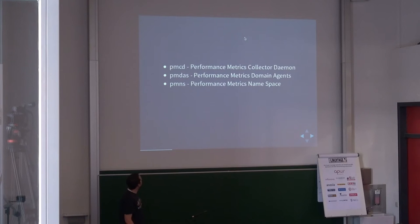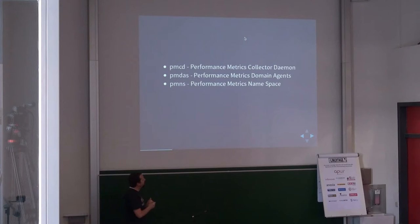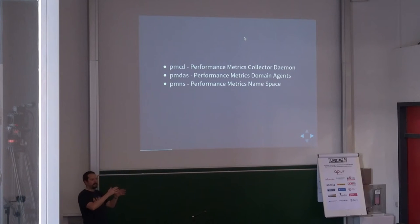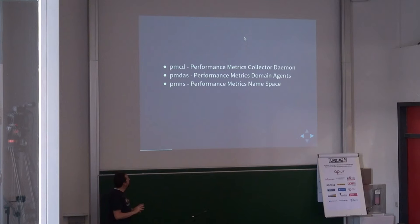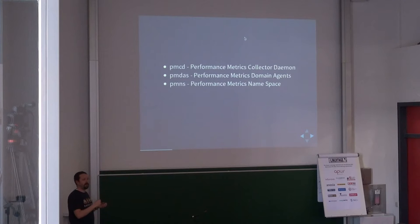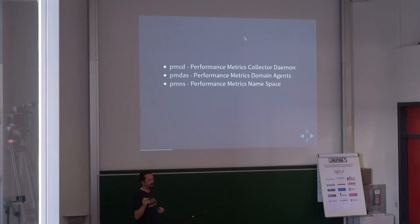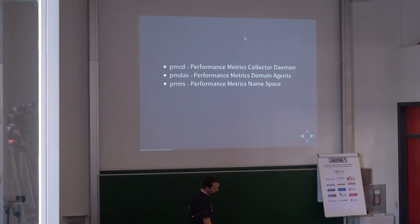Another concept in Performance Co-Pilot is the Performance Metrics Namespace, which is just a namespace of the metrics — a tree where the leaves are the metrics. So you'll have a network namespace with UDP, TCP, whatever protocol you have, and the leaves of this tree are the metrics themselves. For example, network.interface.incoming_packets will have a value of whatever the system has. We'll see a few examples.